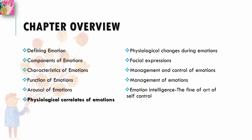To give you a quick recap: in Part 1 of Chapter 2, we learned about defining emotion and the components of emotions. We studied definitions given by well-known personalities in the field of psychology and then came to a conclusion. We also learned about the different components of emotion, including behavioral, psychological, and physiological components.